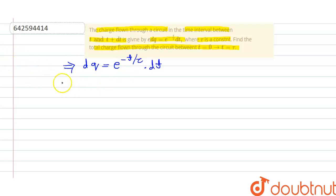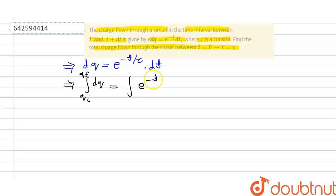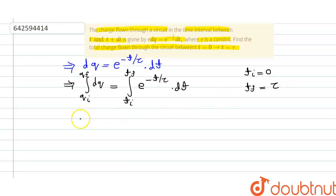To calculate the total charge, we need to take integration on both sides. The initial value of charge qi and the final value of charge qf are set as limits. On the right-hand side, we integrate e raised to minus t by tau multiplied by dt, with time limits from t initial equals zero to t final equals tau. Since initially there is no charge, qi equals zero, and qf equals q.